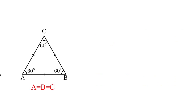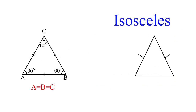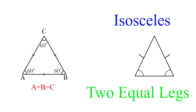Our second triangle is called an isosceles triangle. From the Greek, it means two equal legs. An isosceles triangle has two equal lengths and one length that is slightly different. You can recognize an isosceles triangle by two strokes — one through one side and another through a second side — indicating those two lengths are the same. The result is that two of the angles within the isosceles triangle are the same, with one angle that is different.